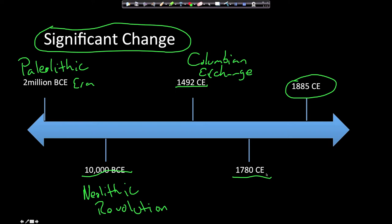We haven't talked about the Industrial Revolution yet — we'll get to that in the next lesson. But right now we're going to talk about what occurred in 1885 CE, and that was the Scramble for Africa. That was when European countries started to colonize and imperialize the countries of Africa — and that's what we're going to talk about today.